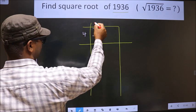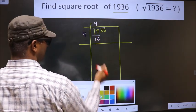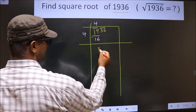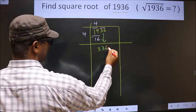So 4, 4, 16. Now you subtract. 19 minus 16 is 3. Now this pair as it is will come down, making it 336.